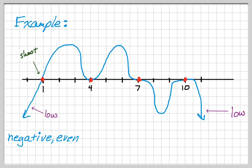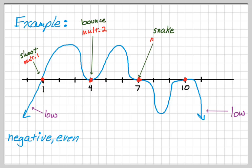At 1, it shoots straight through — multiplicity 1. At 4, it bounces — multiplicity 2. At 7, it snakes its way through and it's not particularly flat, so I'll say multiplicity 3. At 10, there's a very flat bounce, so the multiplicity is higher than 2 — I'll go with 4.